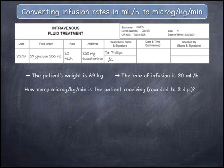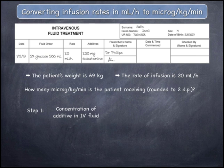Rounded to two decimal places, what rate of infusion in micrograms per kilogram per minute is being delivered? This calculation should be undertaken in a series of steps in order to simplify it. In the first step, calculate the concentration of the dobutamine additive in the IV fluid.